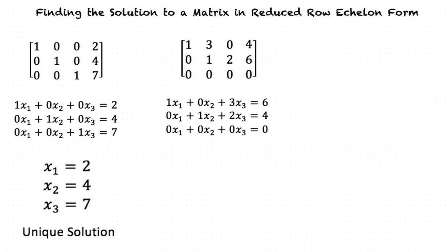This will give us 1x1 plus 0x2 plus 3x3 is equal to 6. 0x1 plus 1x2 plus 2x3 is equal to 4. And 0x1 plus 0x2 plus 0x3 is equal to 0.